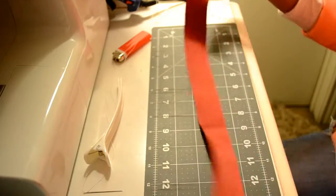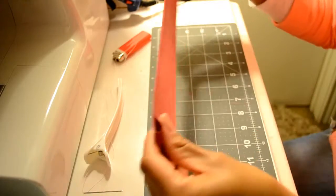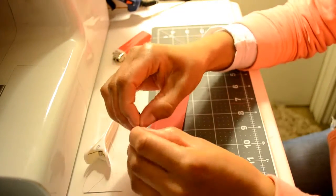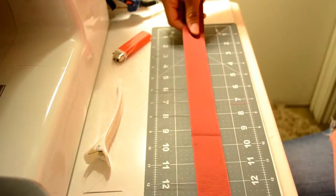Go ahead and cut your ribbon to 23 inches. Fold it in half, make a nice crease in the middle, and then open it.